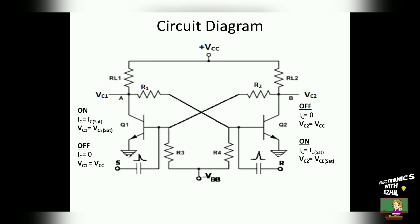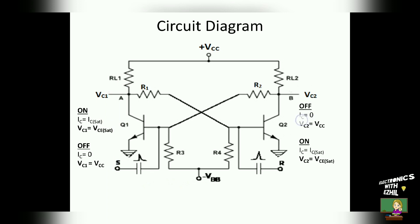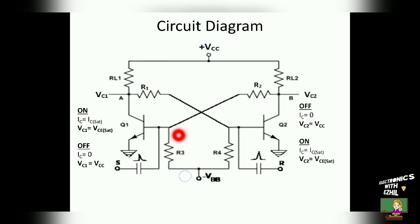Now we will see the working of bistable multivibrator. This is the circuit diagram. The transistors Q1 and Q2 are cross coupled — the collector of transistor 1 is coupled to the base of transistor 2 through resistor R1, and the collector of transistor 2 is coupled to the base of transistor 1 through resistor R2. RL1 and RL2 are the identical load resistors for Q1 and Q2 respectively. R1 and R2 are identical, and Q1 and Q2 are identical NPN transistors. A minus VBB voltage is applied to the base of each transistor through resistors R3 and R4, which helps the bistable multivibrator circuit stay in its stable state.